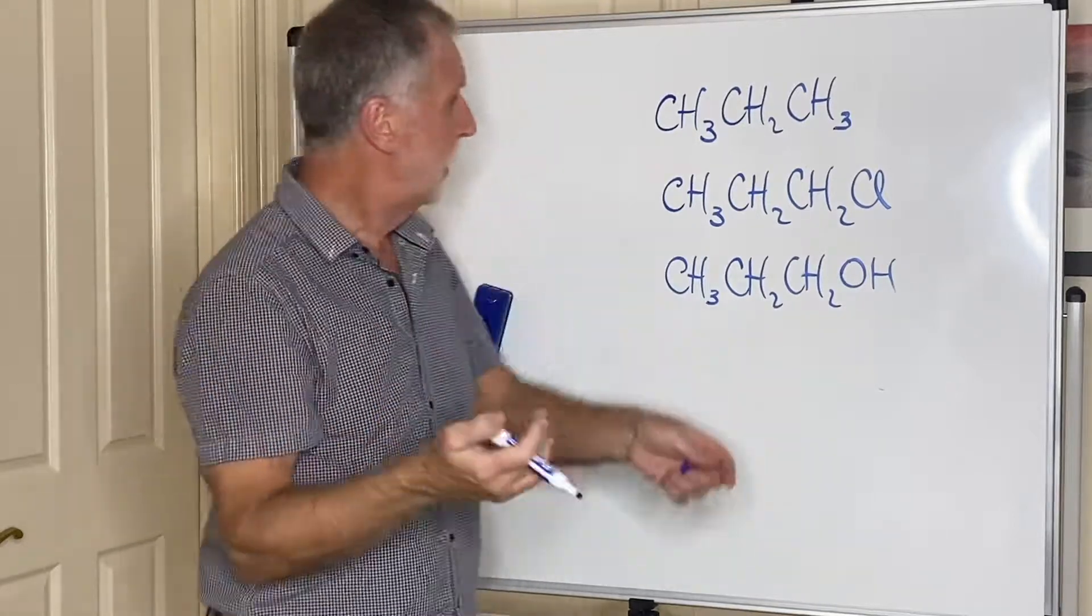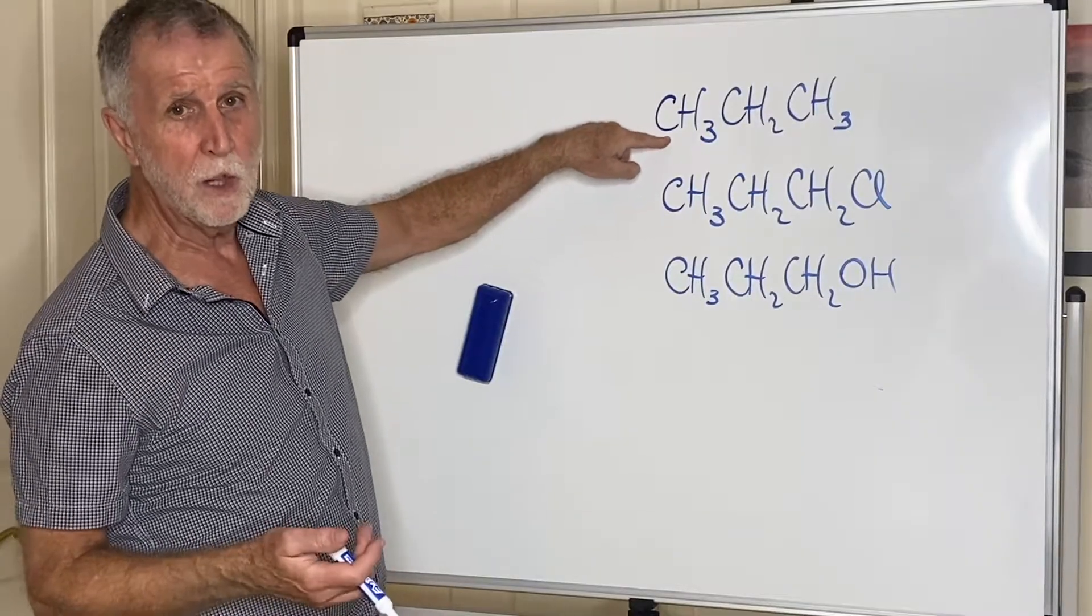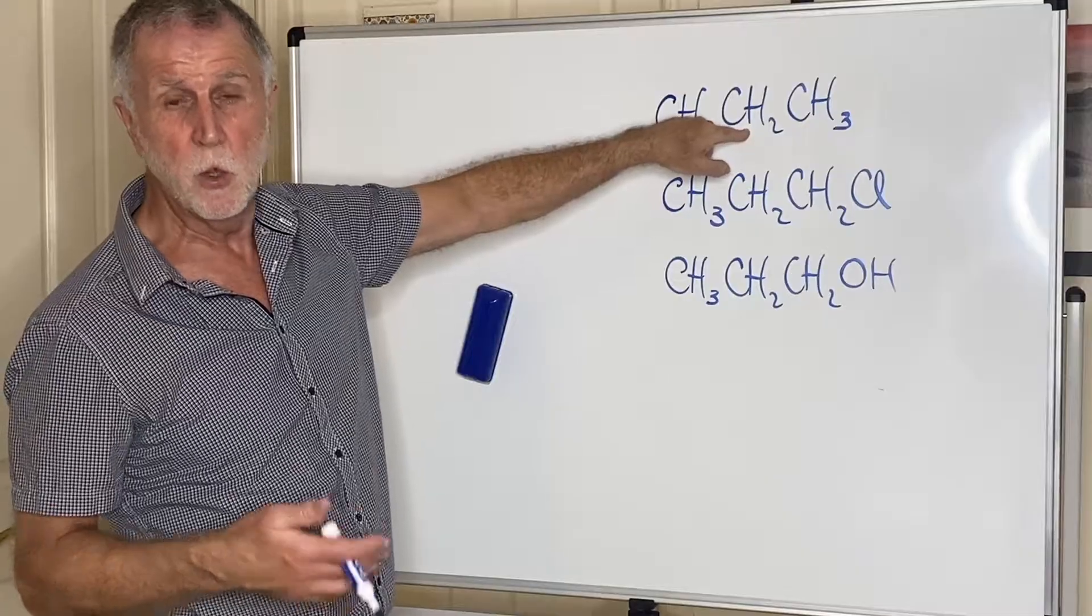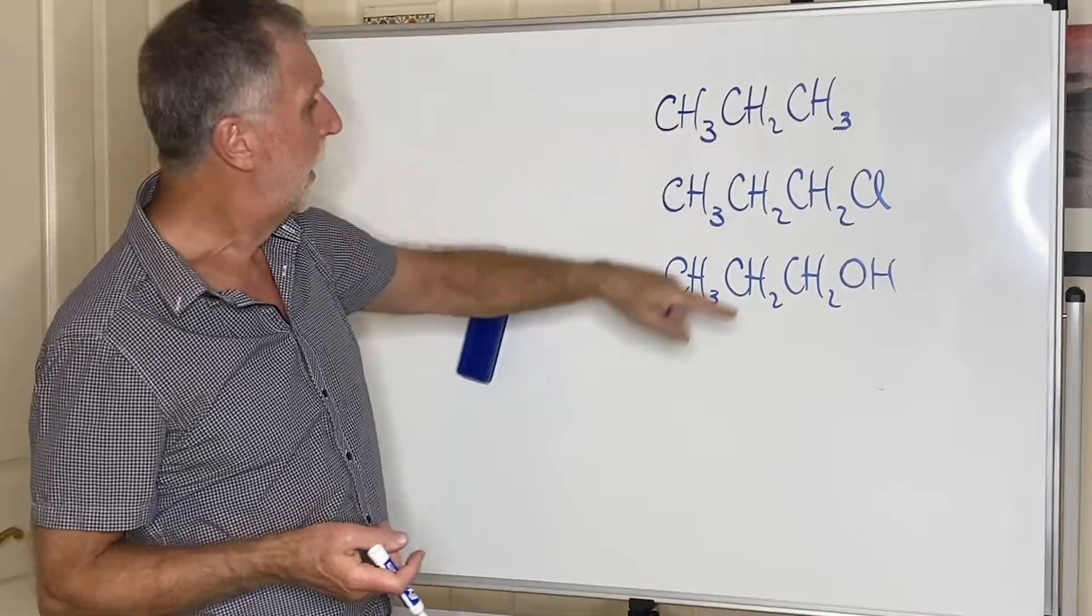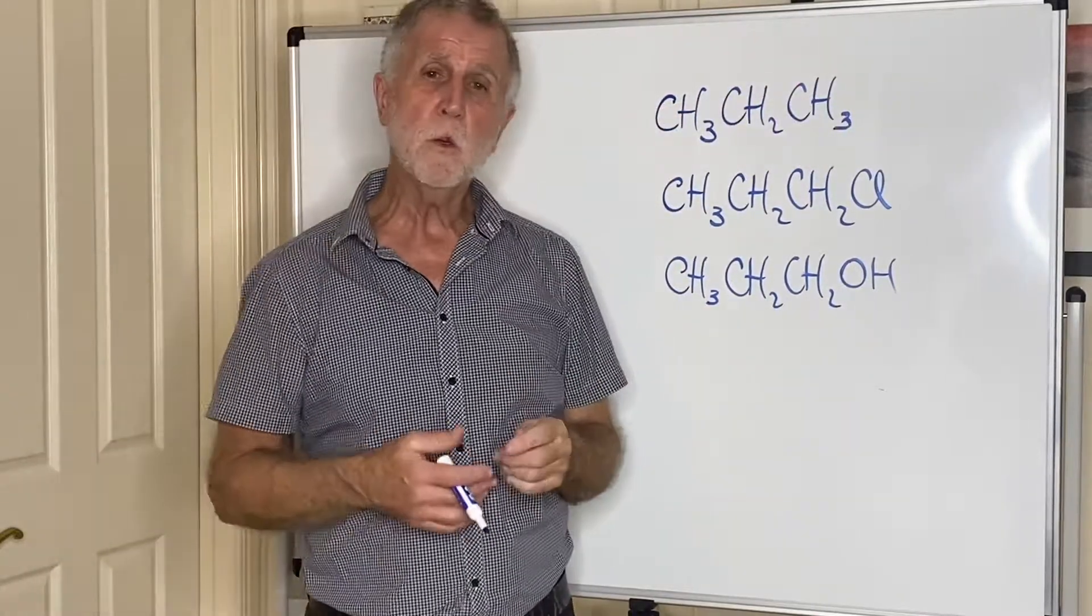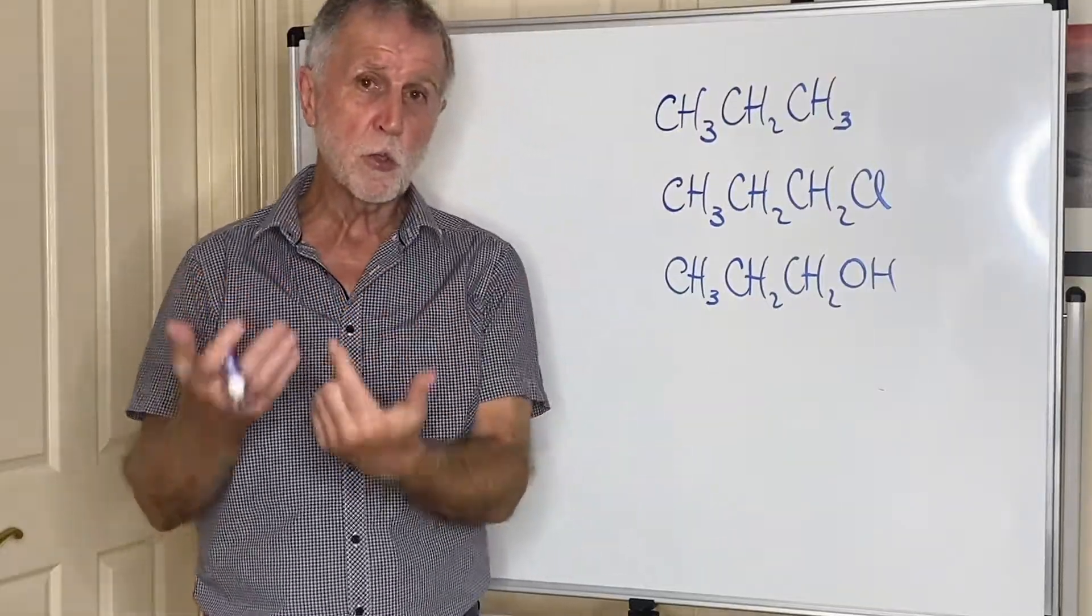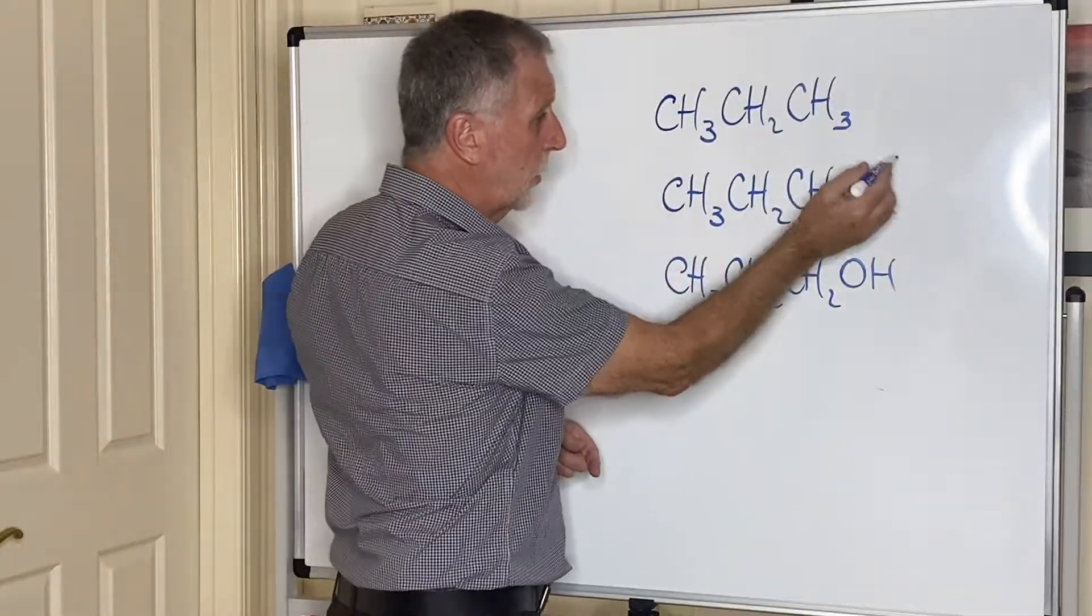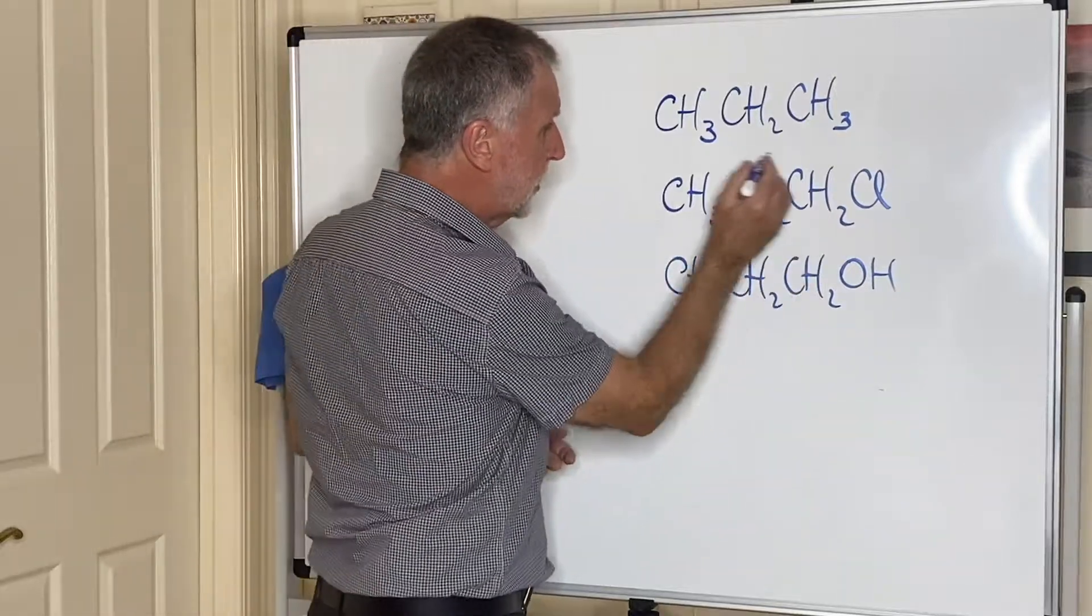As such, the only forces that can hold them together are weak dispersion forces. Some books will call them van der Waals forces. They arise because of the movement of electrons creating these temporary dipoles. They are the weakest of the intermolecular forces. So these alkanes are very low melting and boiling. In fact propane is a gas at room temperature, which you knew because you put it in your barbecue every time you have a barbecue.